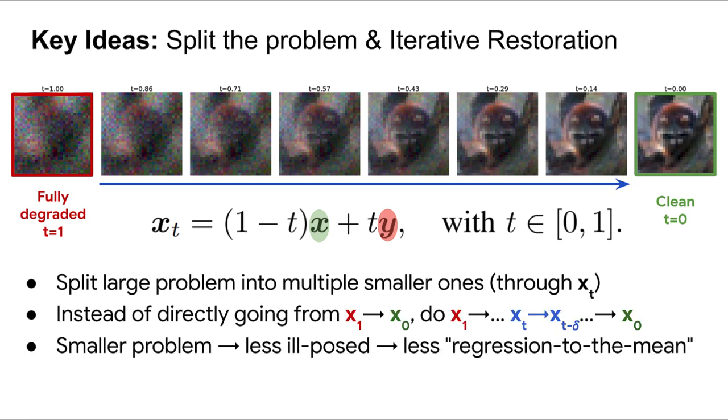So, instead of directly trying to do one step reconstruction and go from x_1 to x_0, what we do is we move little by little through these intermediate steps. The key intuition is that each of these smaller problems will be less ill-posed, so we will less suffer from this regression to the mean effect.